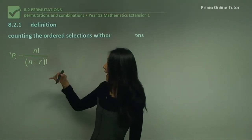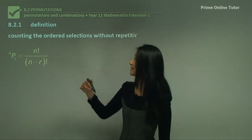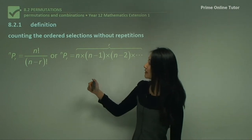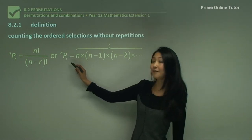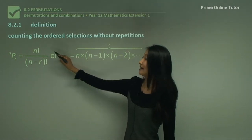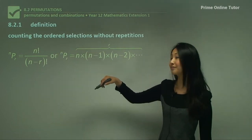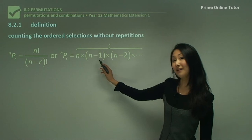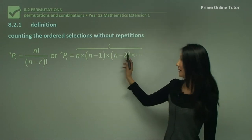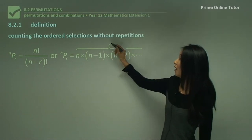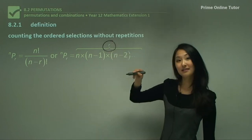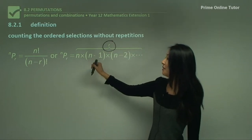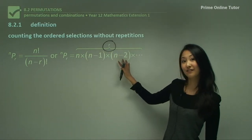What I mean by that is we can look at the other way this is expressed: if you have ⁿPᵣ and n is n factorial, then it's going to be that number times one number less than that, times a number less than that, for r amount of numbers. So r just tells you how many of these you do.